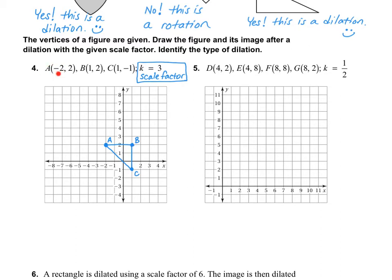multiply each of our x and y by the scale factor. So I'm going to multiply the negative 2 by 3 and this 2 by 3 and this by 3. Everything gets multiplied by 3, and that will give us our new points.